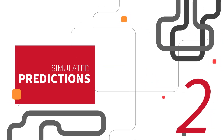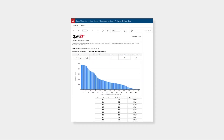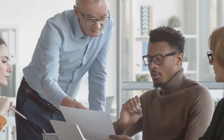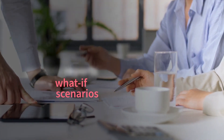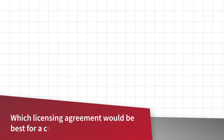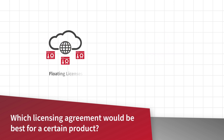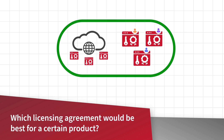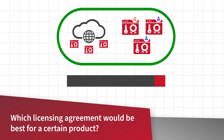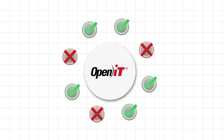2. Simulated Predictions. This brings us to the second capability that really helps distinguish us in the field. On top of standard usage and utilization reports, OpenIT allows you to dive deeper into your data and generate reports showing projected what-if scenarios based on license usage. For example: which licensing agreement would be best for a certain product? Having a single global license server or two local ones? Will it be best to have floating licenses or named licenses for a certain product? Maybe having a mix of the two is better, and if so, what would be the optimal ratio between them? OpenIT will offer you the ability to answer all these questions and many more, allowing you to optimize your license environment by seeing all the available options and how they will affect your organization.